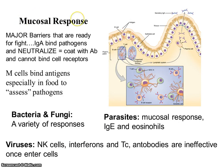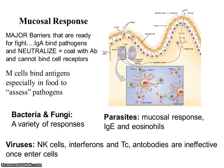Here again is our mucosal response, applying all the things we've learned in this chapter. Major barriers are ready for fight. Immunoglobulin A binds pathogens and neutralizes - we coat with an antibody so it cannot bind a cell receptor. Mucous membranes are shown here. M cells bind antigens, especially in food, to assess pathogens - here are these M cells, part of your digestive tract.